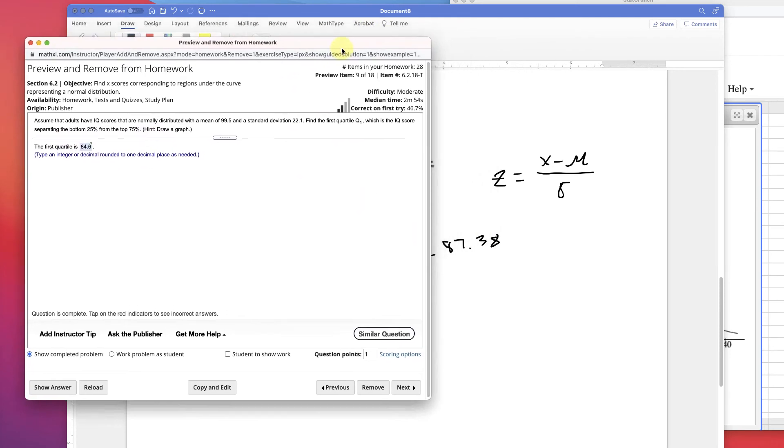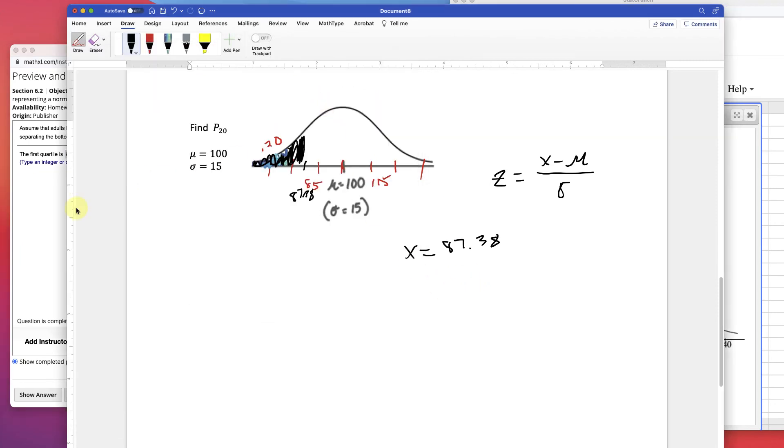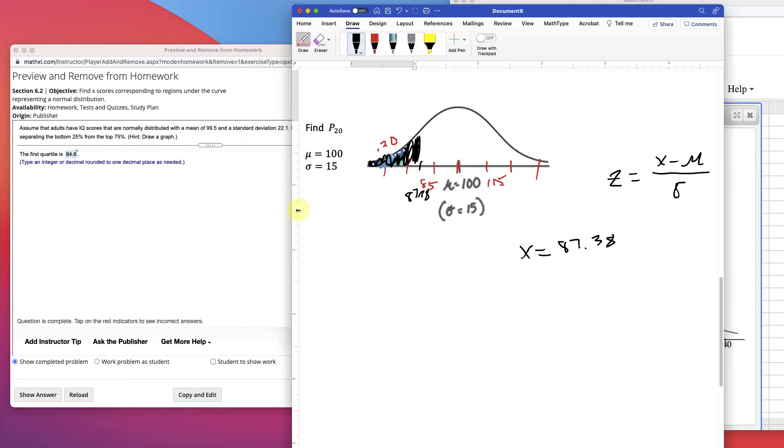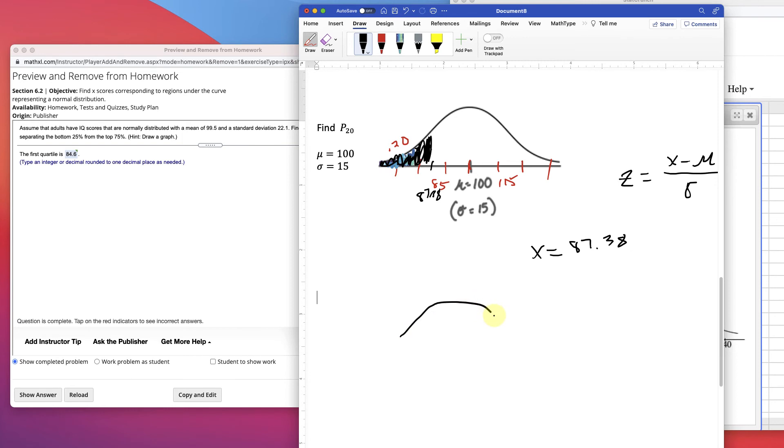Let's kind of look at this. We could draw a picture if we wanted to, just to get an idea of what it looks like. We have the graph, and in the middle right there is the mean, 99.5. Standard deviation of 22.1, okay?